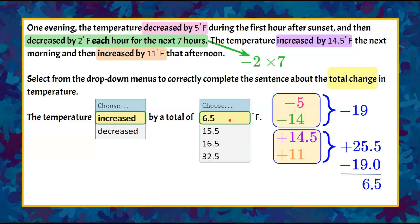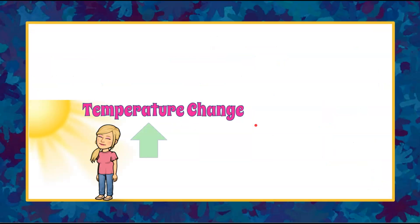We know that our total change is a positive 6.5 degrees, which is right here, our first answer choice in the drop-down box. So we can now say that the temperature increased by a total of 6.5 degrees Fahrenheit, and that is how you calculate temperature change over a period of time.